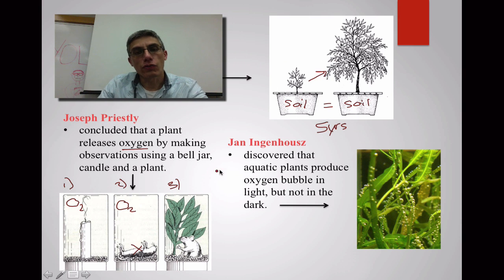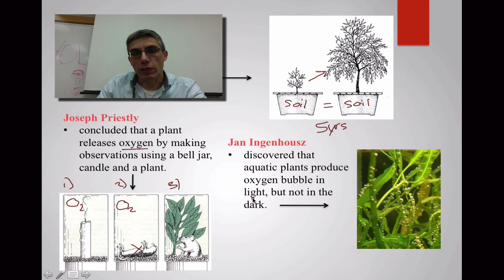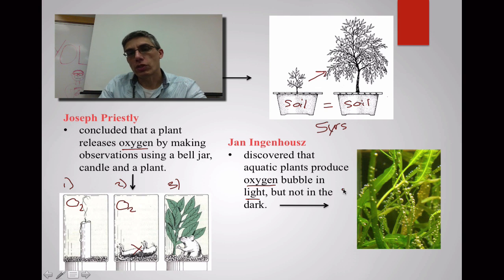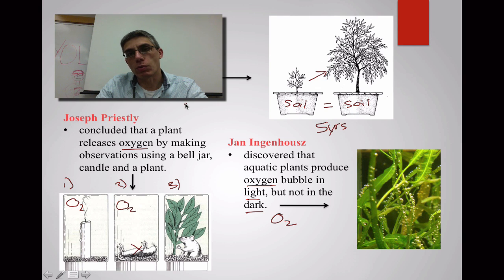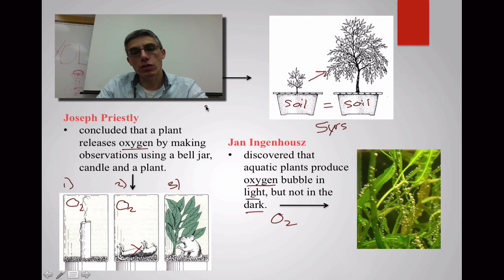Jan Ingenhaus took the information from Priestley's experiment and took it a step further. He discovered that it was important for plants to be exposed to light in order to produce oxygen. He used aquatic plants in his experiments, and when he put these plants in the dark, they did not produce as much O2. These three scientists are really important — think about how they contributed to the chemical equation for photosynthesis that we're going to look at next.